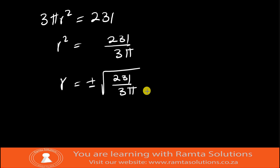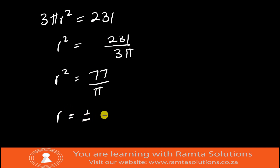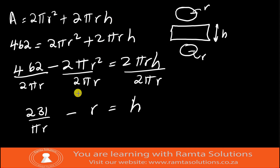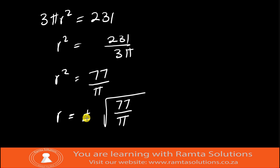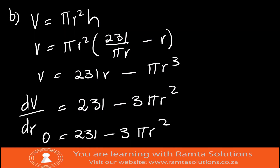Simplifying: r² = 77/π, so r = ±√(77/π). Since r cannot be negative, we take the positive value only. Therefore r = √(77/π) units.